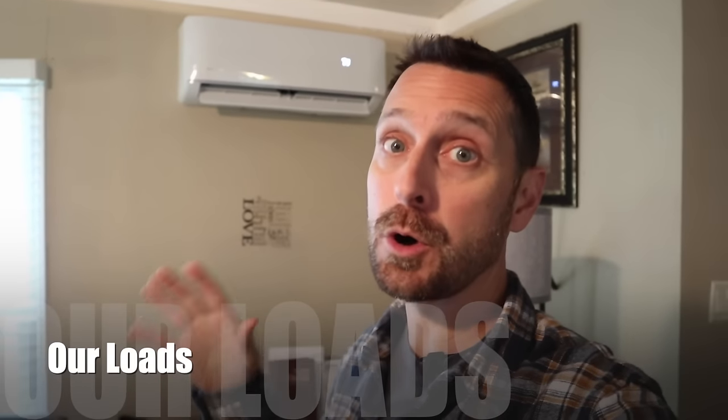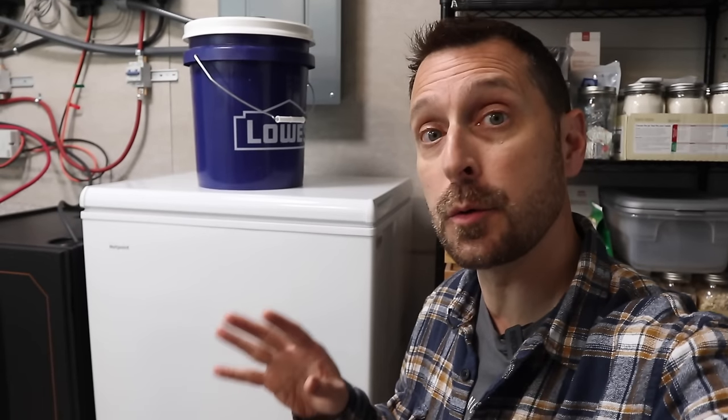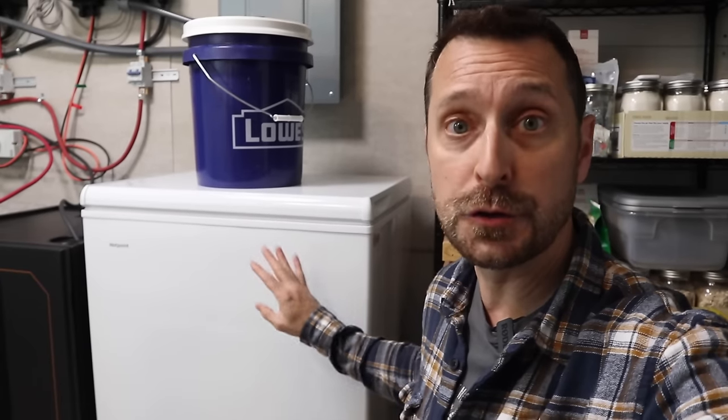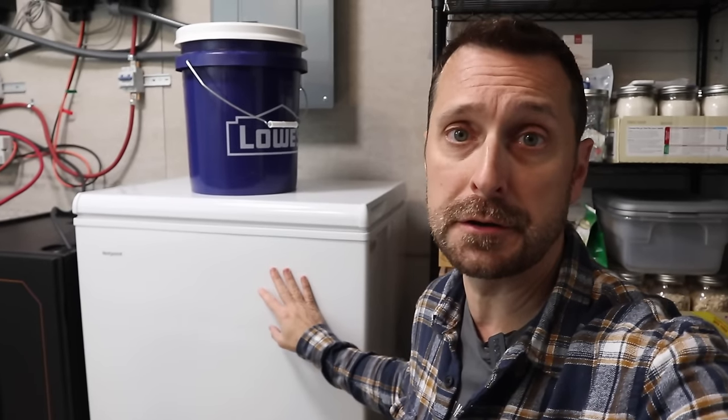So most of our loads last night were from the heating from our mini splits in three rooms of the house: this main space here, our daughter's bedroom, and our bedroom. If you haven't seen our installation video on how to do one of these, click on the video at the top of the screen. And the only other things that were running in the house last night were the security lights outside, our two freezers, and our two refrigerators.